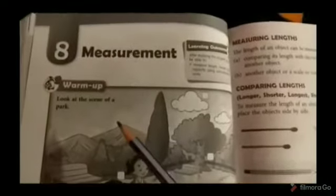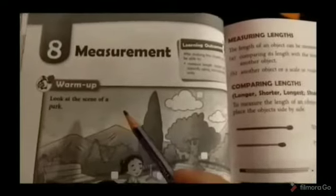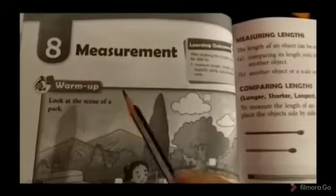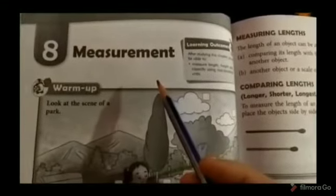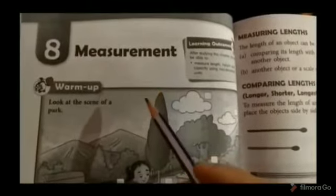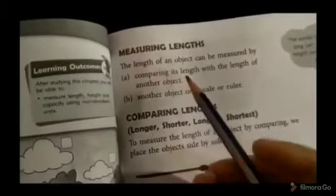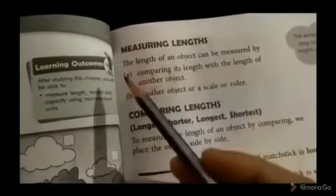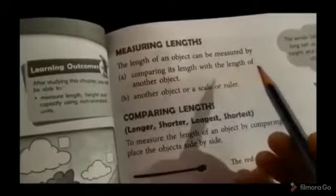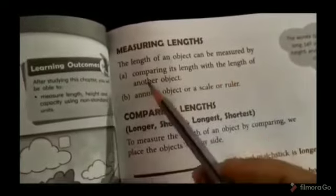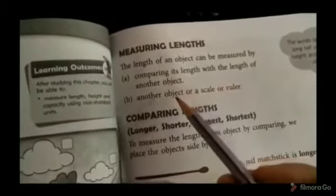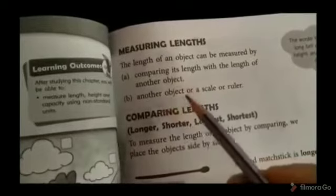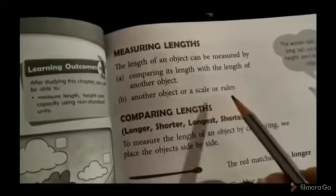Hello children, this is your new lesson — Lesson Number 8: Measurement. Measurement means the act or process of measuring something. The length of an object can be measured by comparing its length with the length of another object, or a scale or ruler.